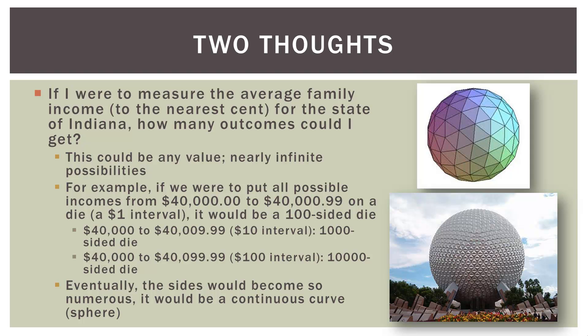But in this case, eventually, the number of sides would become so numerous that our sphere, our die, would become a continuous curve, almost like a marble. Because the differences between each cent interval in our average income are so small, you wouldn't be able to tell the sides apart anymore because there are so many. So I want you to think about this example, versus the die that just has six sides.